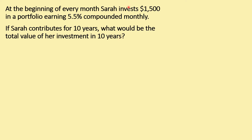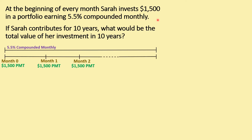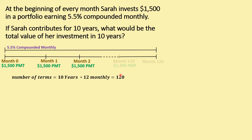This is clearly an annuity question — $1,500 is being deposited frequently at 5.5% compounded monthly. More importantly, it's a time value of money question. The first thing to do is draw a timeline. The interest rate is 5.5% compounded monthly throughout the entire period, and payments are made at the beginning of each month. The number of payments is 10 years times 12 months, giving us 120 payments, with the last investment in month 119.